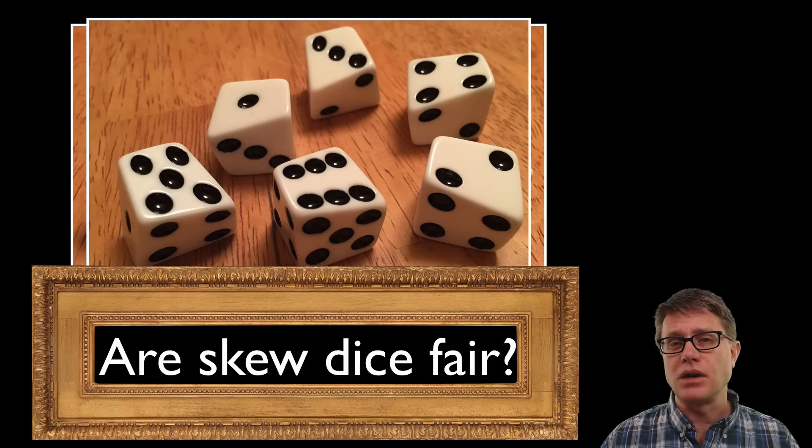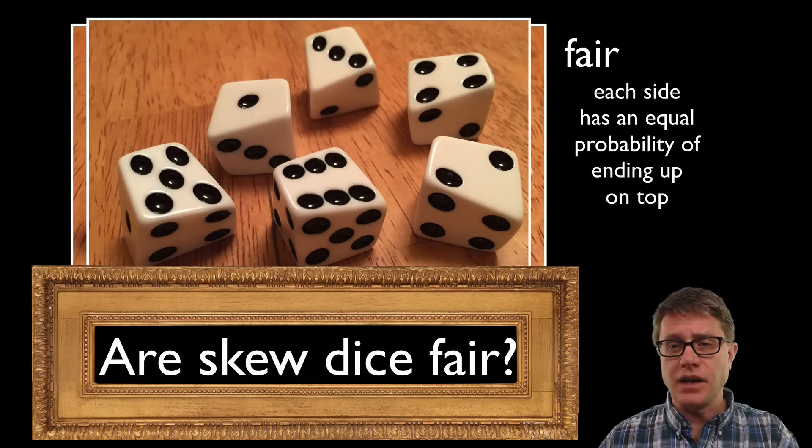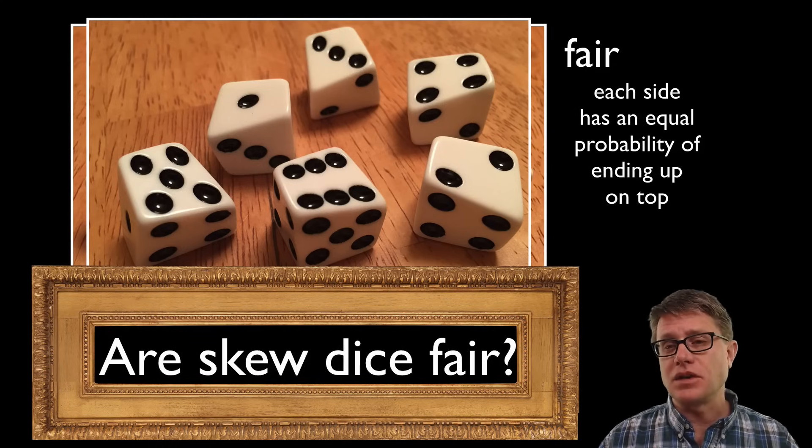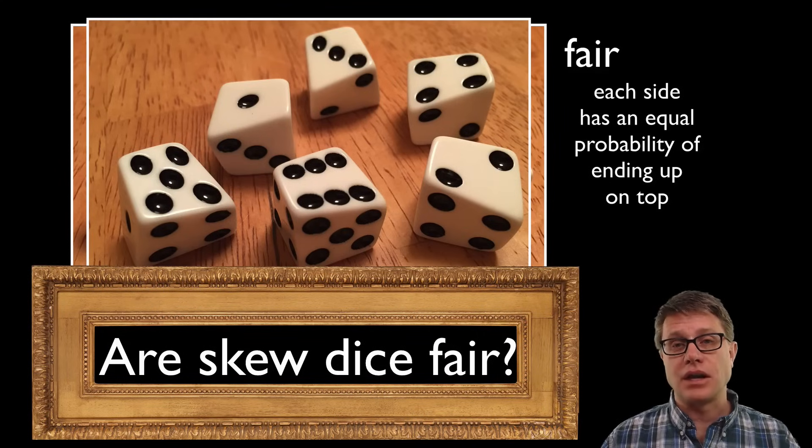Make sure that you could define everything that's in this question itself. I'm sure you know what skew dice is, but are we all in agreement with what it is to be fair? Well let's define it. Fair is this idea that each side has an equal probability of ending up on top. Now once we have that definition you can use that in that logical connection.